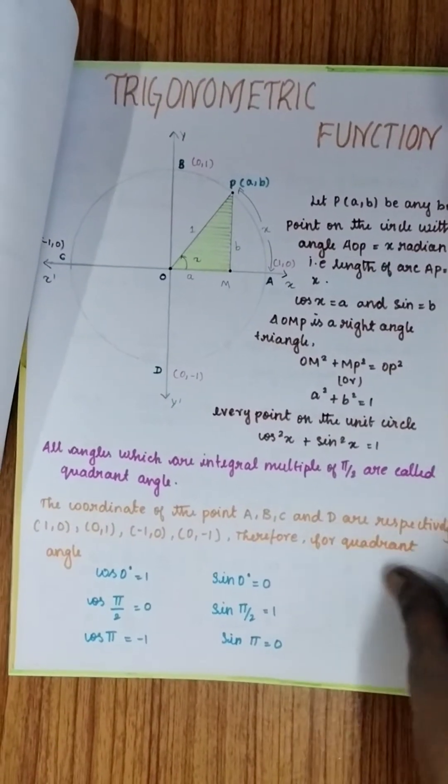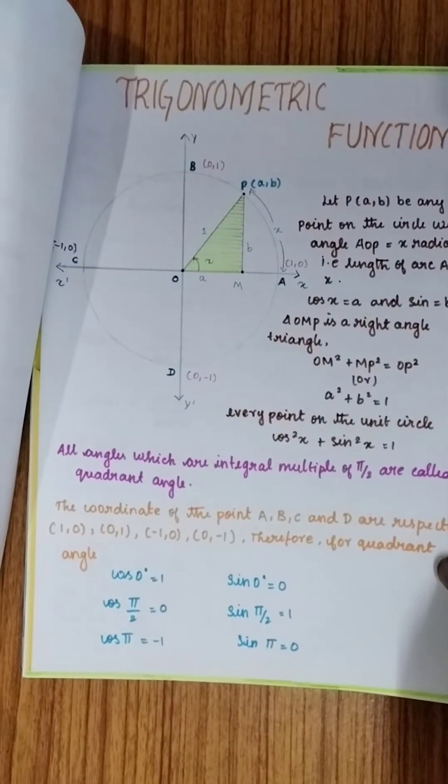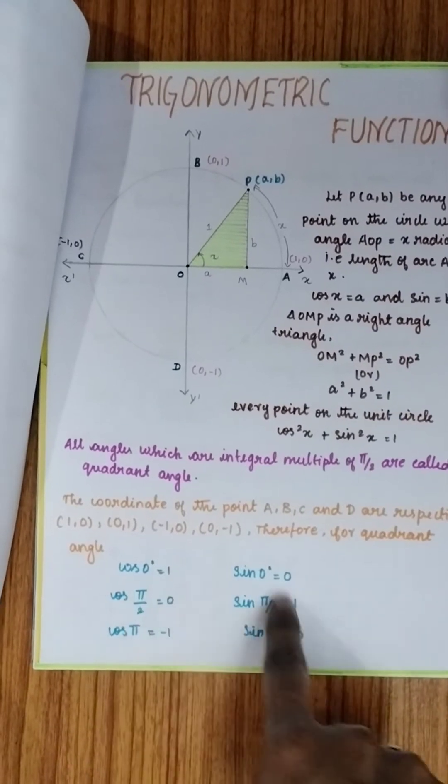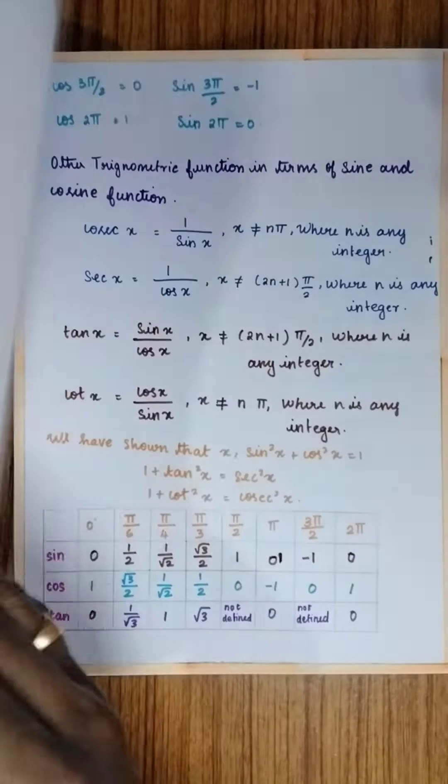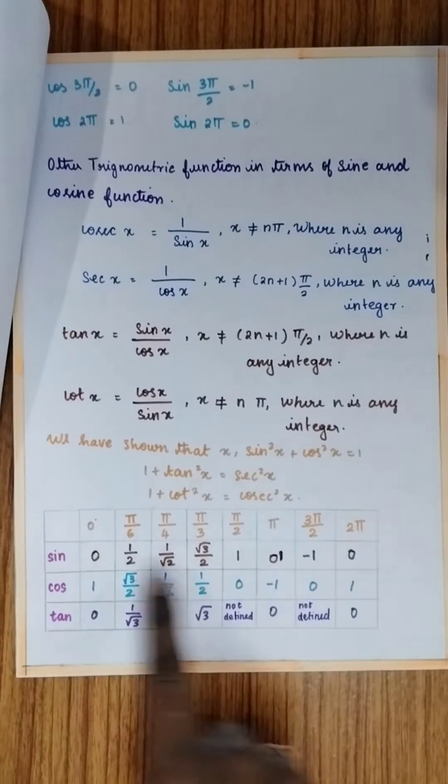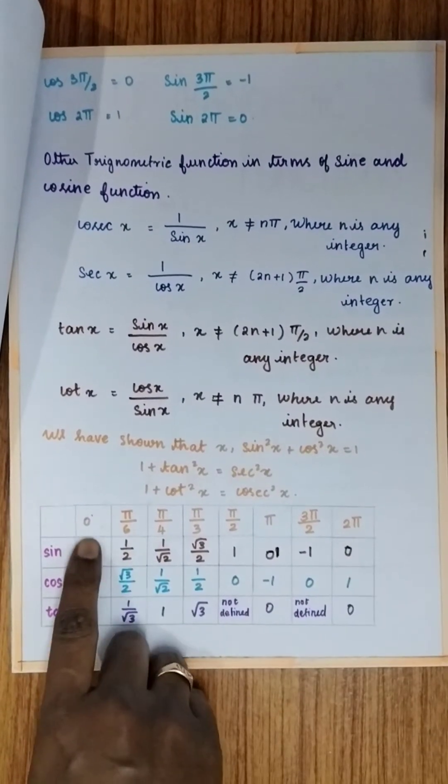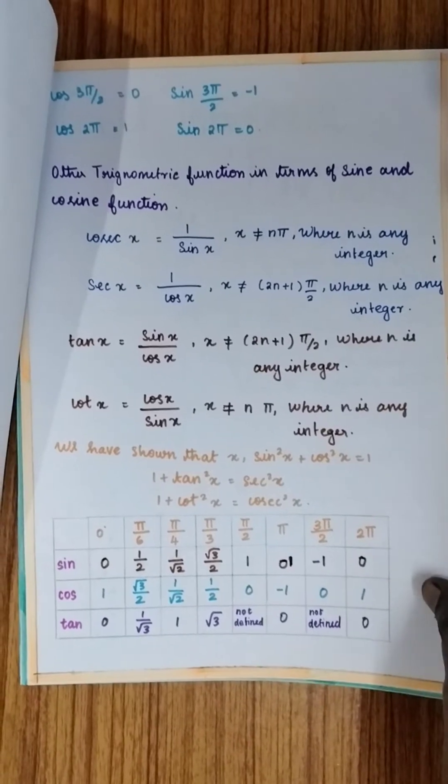On the next page we have trigonometric functions. How do we take 0 values, pi by 2 values with respect to the 4 quadrants that is being explained here and these are all the relevant values from 0 to 2 pi, standard table values.